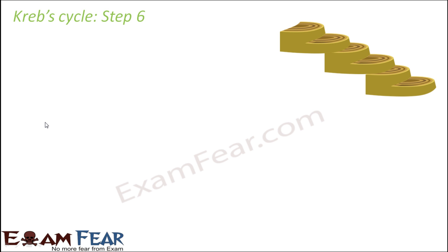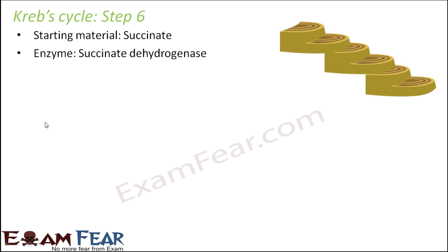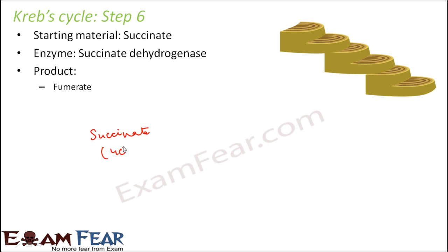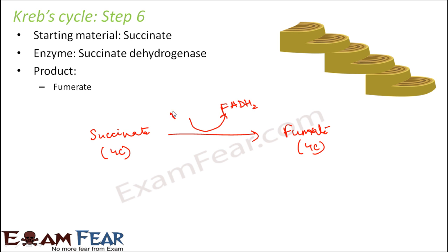In the next step, starting with succinate in the presence of the enzyme succinate dehydrogenase, the product formed is fumaric acid or fumarate. Succinate is a four-carbon compound and fumarate is also a four-carbon compound. During this process, FADH2 is released.